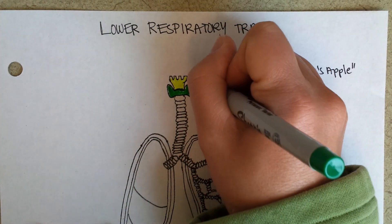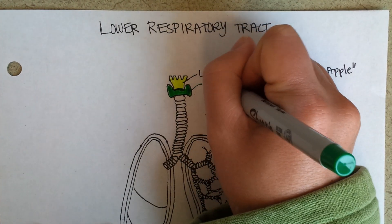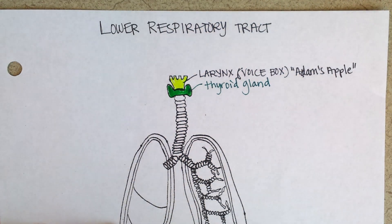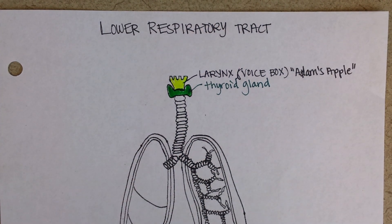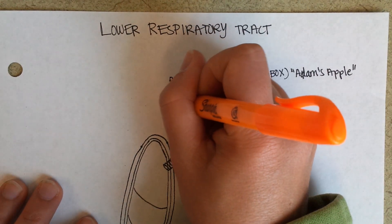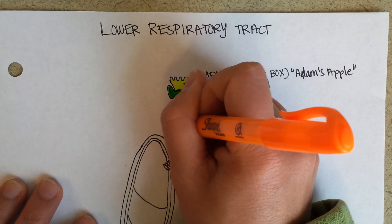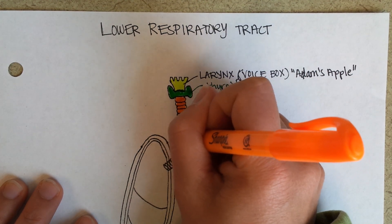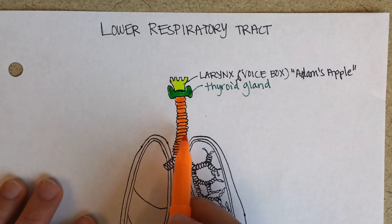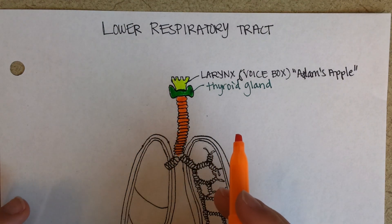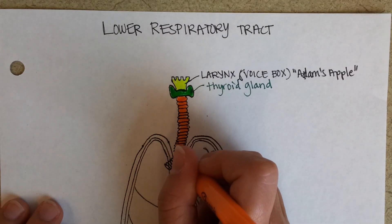The thyroid gland doesn't go all the way around the trachea, but it can be palpated in that region. Then the trachea continues. It's made of the same kind of cartilage as the larynx — it's horseshoe shaped, so it doesn't actually entirely encircle the trachea. The cartilages just go around the front of it, not around the back as well.